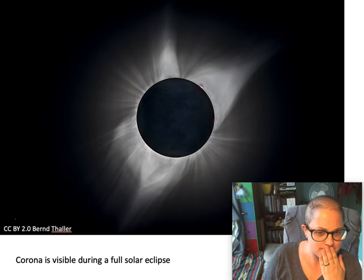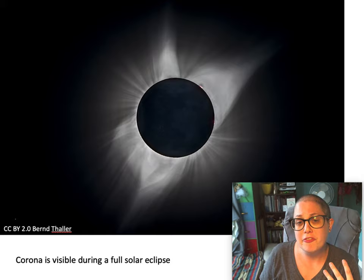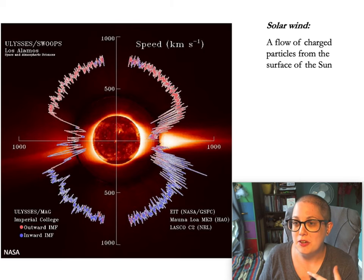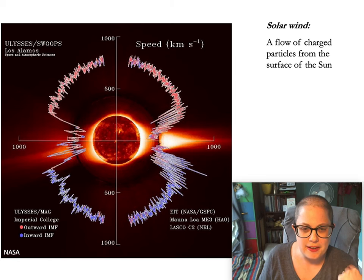So all of this material coming off of the sun in general is called the solar wind. So this is a measurement of the speed of the solar wind at different locations around the sun. It's a flow of charged particles, so charged particles means these positive or negative charged ions that come from the surface of the sun. And these are the things that can actually affect us here on Earth, which I'll get to in a minute.